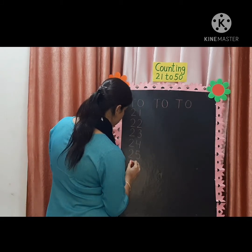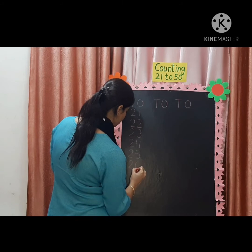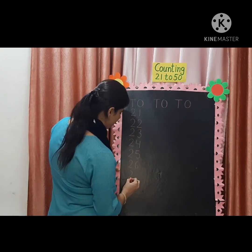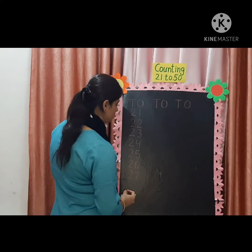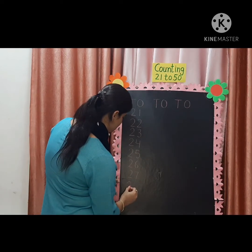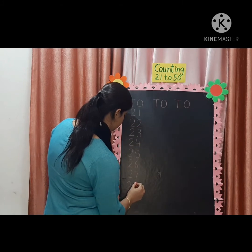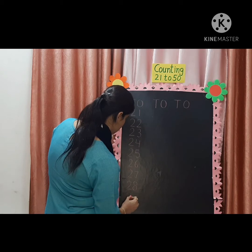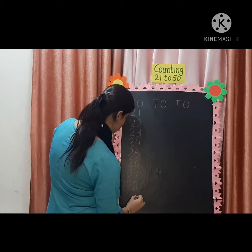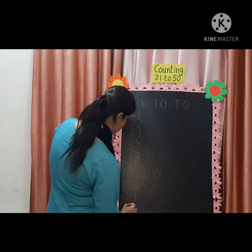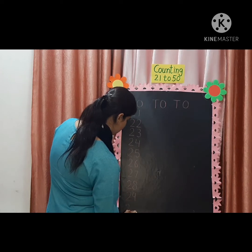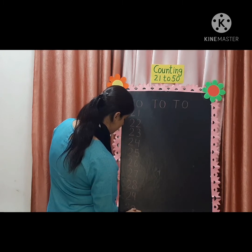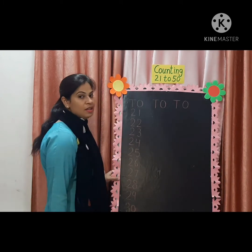2, 6 — 26. 2, 7 — 27. 2, 8 — 28. 2, 9 — 29. 3, 0 — 30. We will make 3 with a curve at the top and round at the bottom as well. 3, 0 — 30.